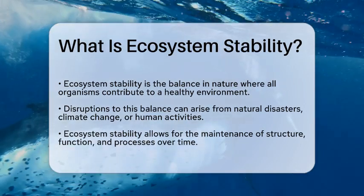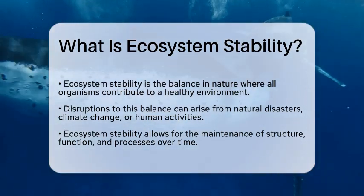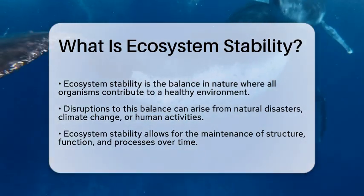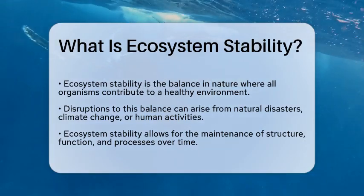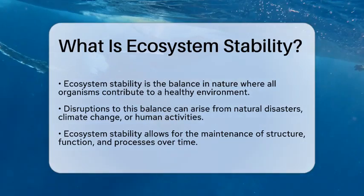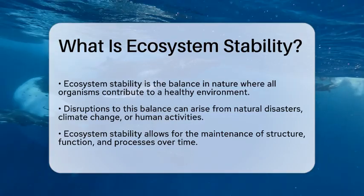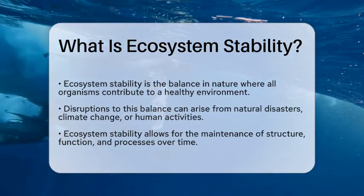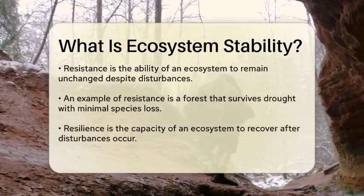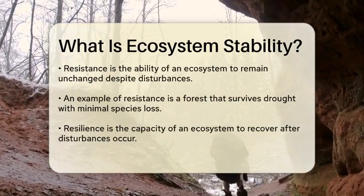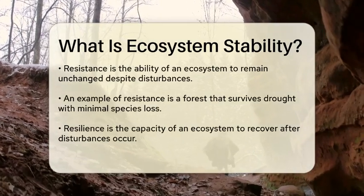Ecosystem stability refers to the ability of an ecosystem to maintain its structure, function, and processes over time, even when faced with disturbances such as natural disasters, climate change, or human activities. A stable ecosystem can withstand these changes and recover from them, ensuring that the interactions between its components remain intact.